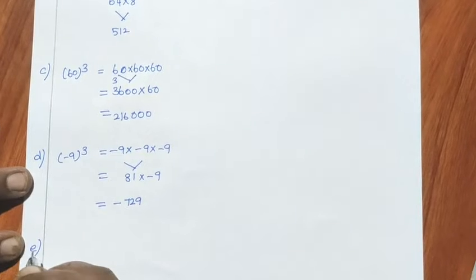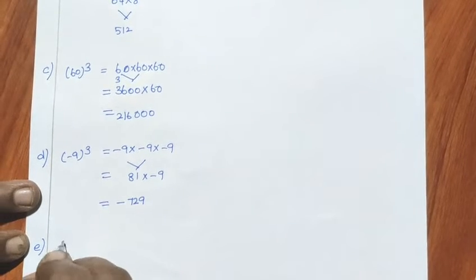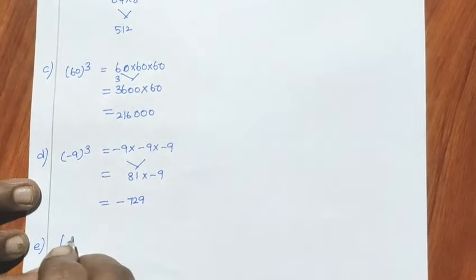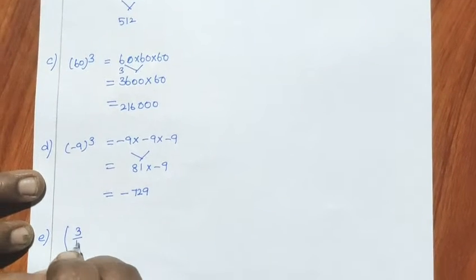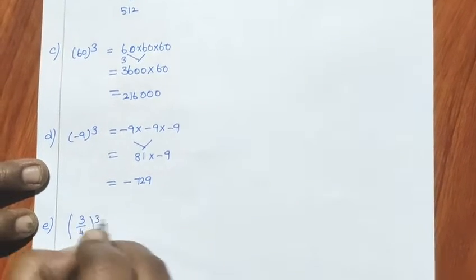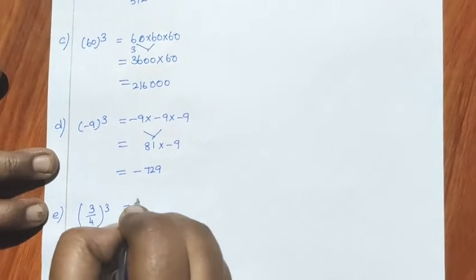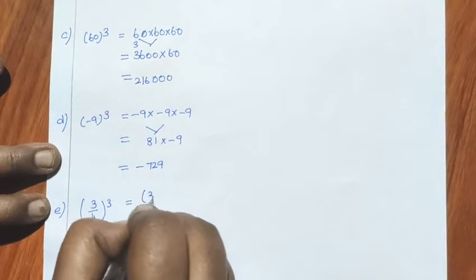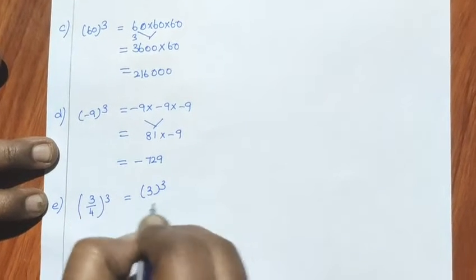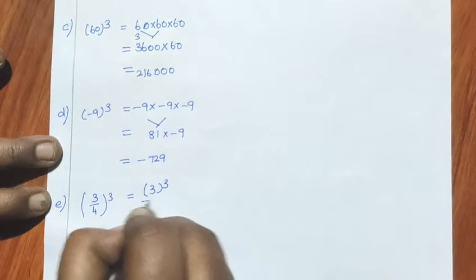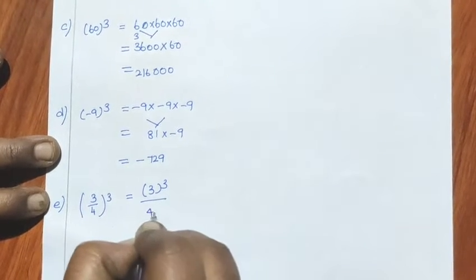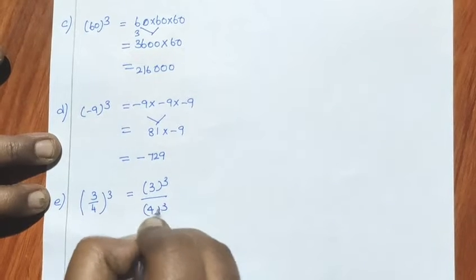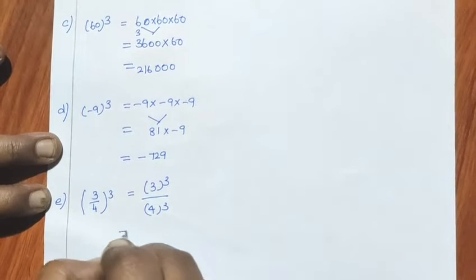E sum — let's look at it. I'll show you how to do this example. 3 by 4 the whole cube. How do we calculate it? 3 the whole cube divided by 4 the whole cube.